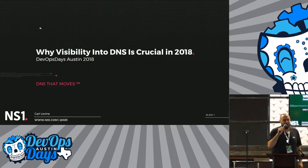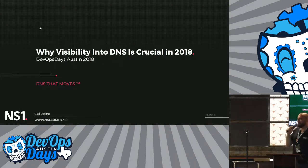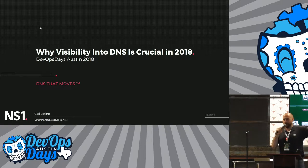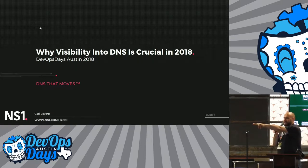All right, let's do this. I'm Carl Levine. I'm from NS1. We're an authoritative DNS provider based in New York City. I'm from New Hampshire. I brought two of my buddies with me, Isaac and Nate.